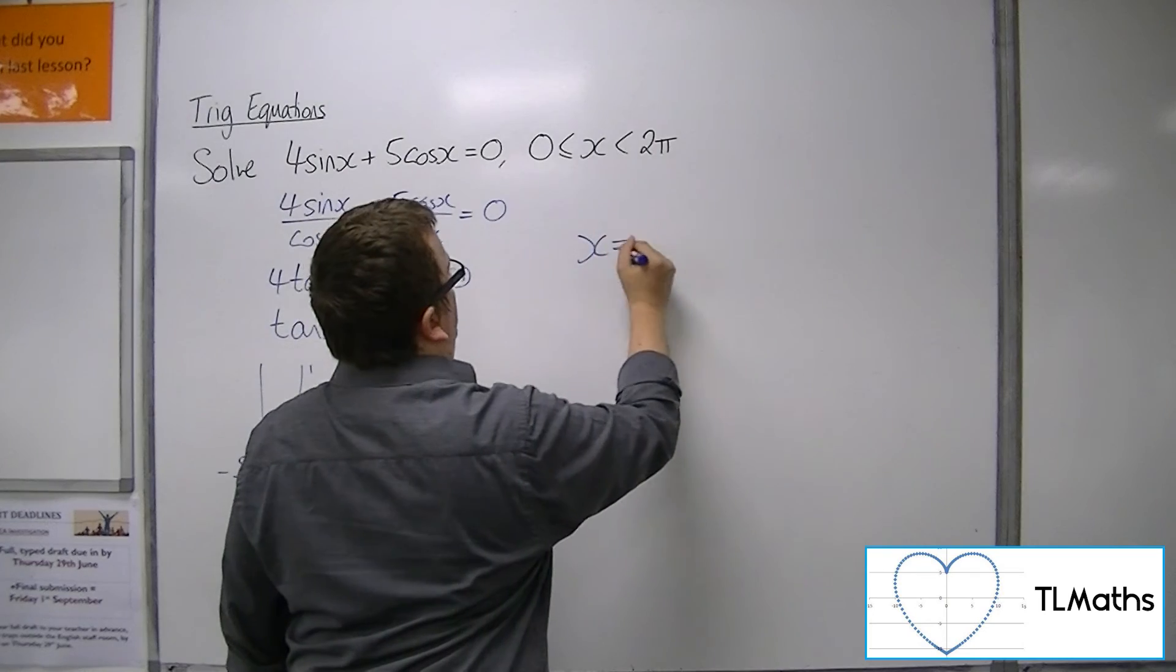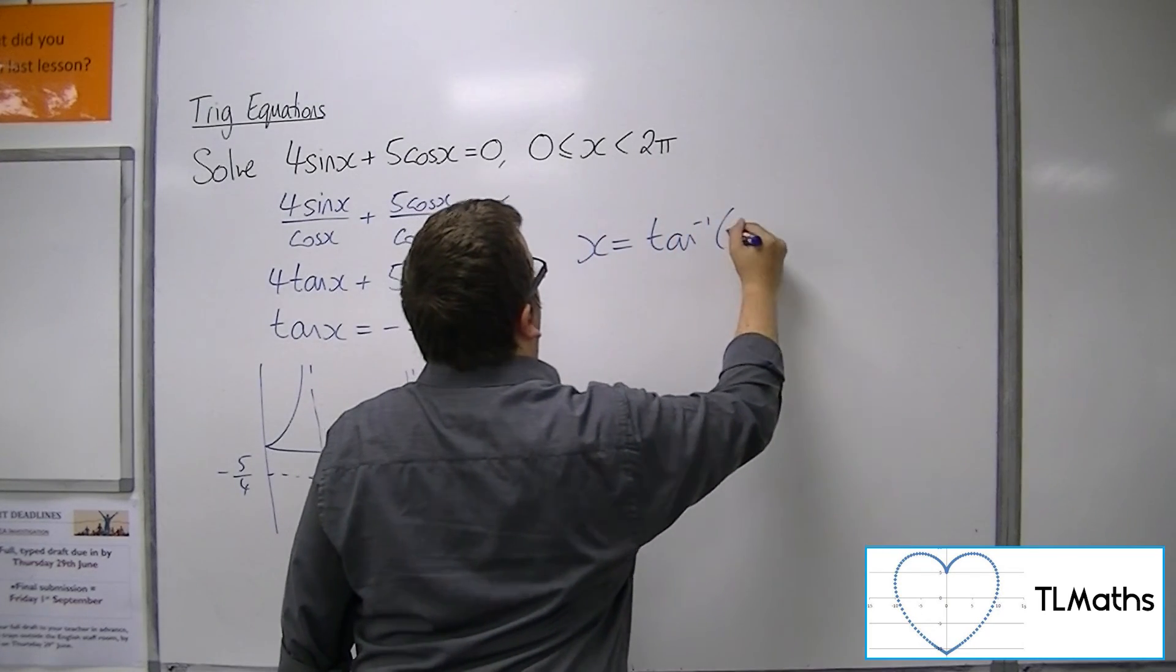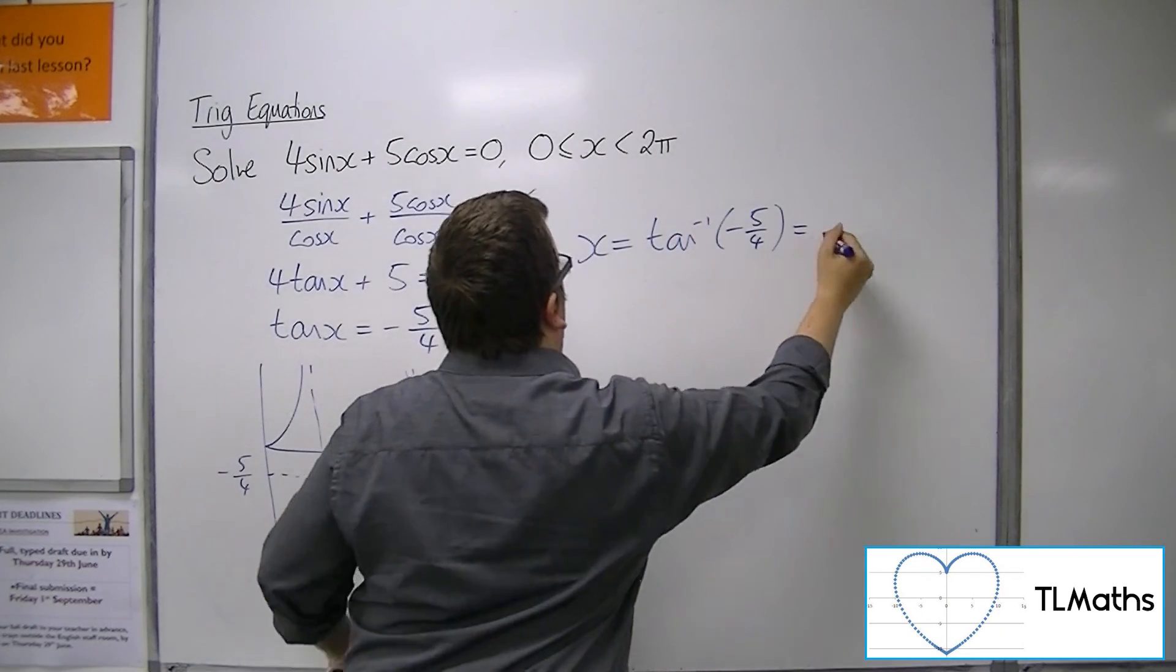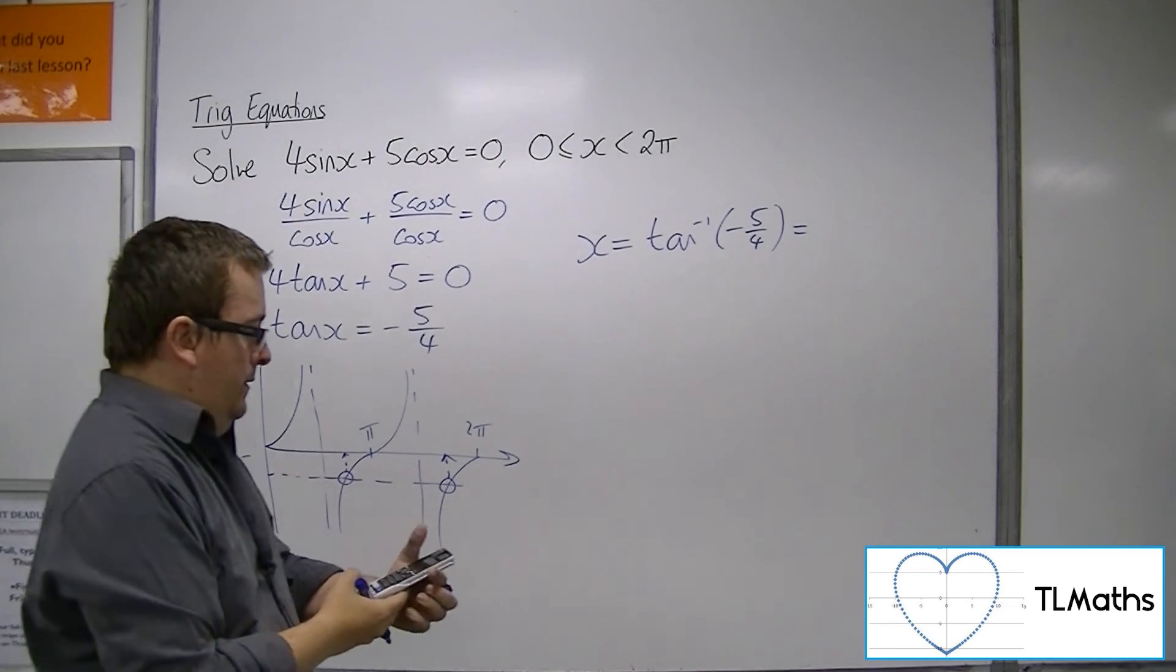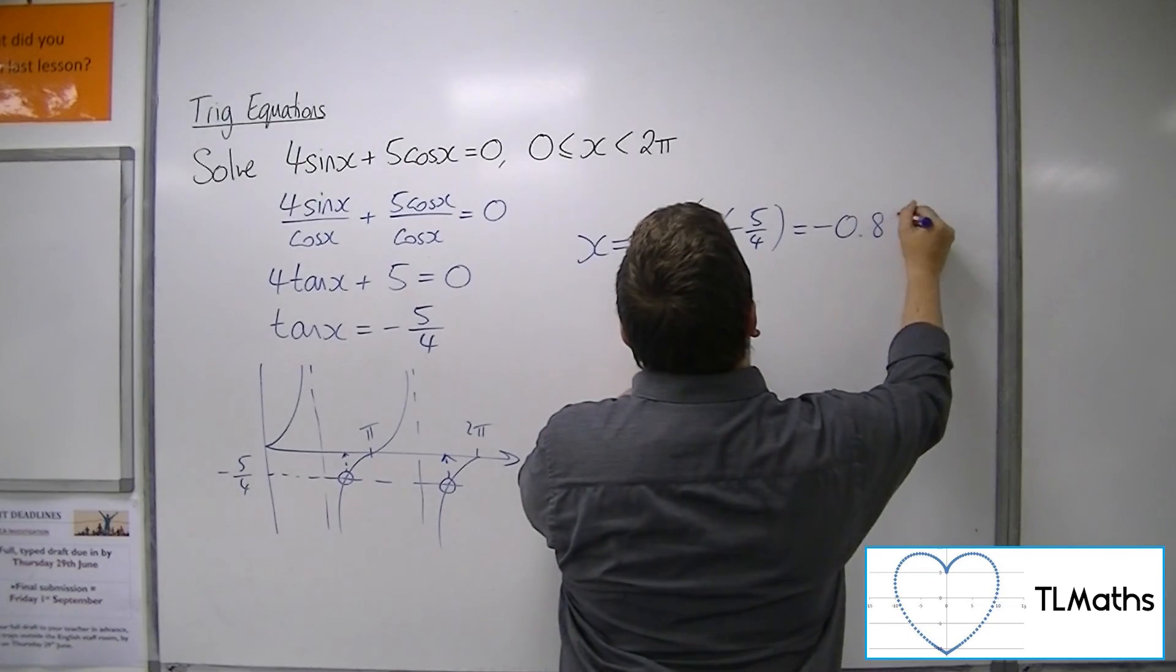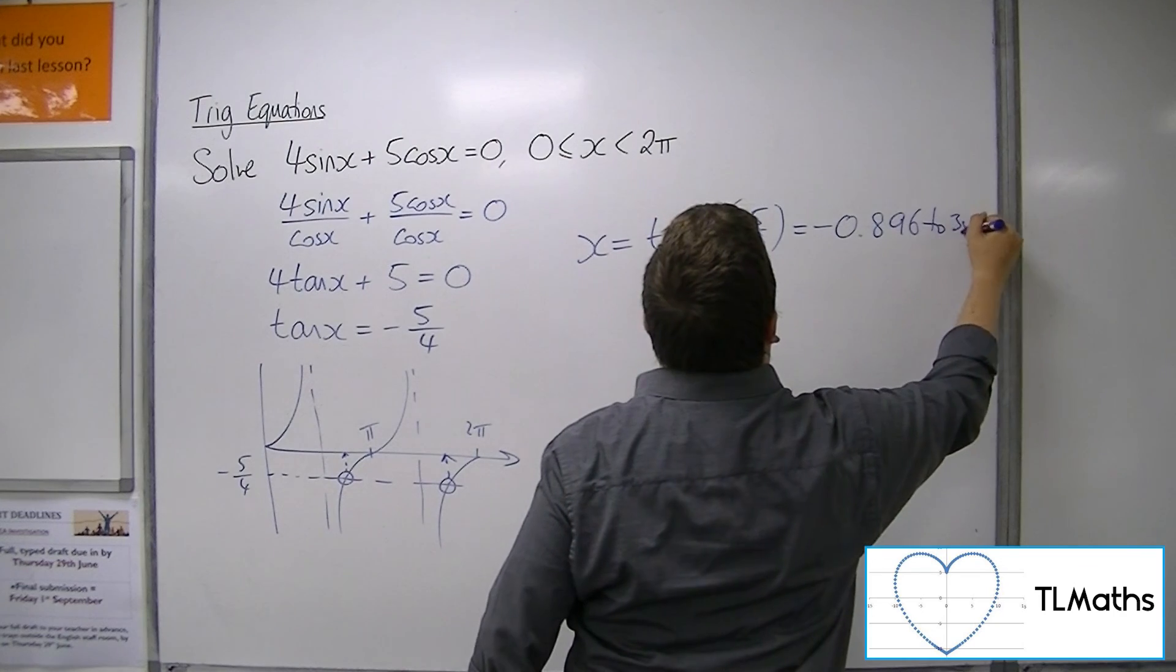So the first solution, well, let's get there first. Inverse tan of -5/4 is -0.896 to 3 significant figures.